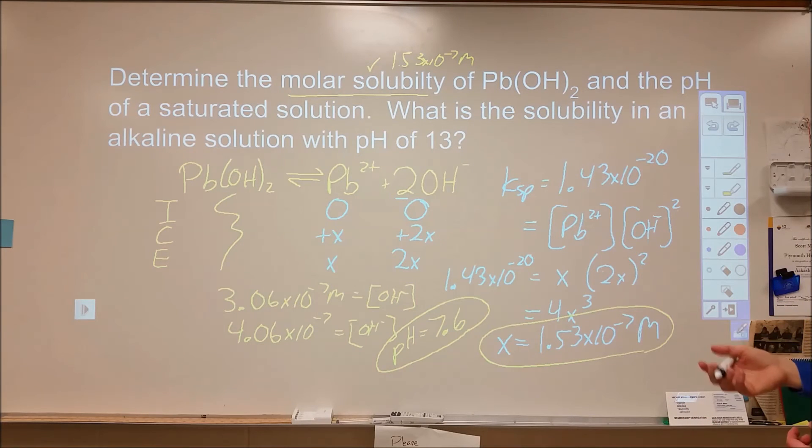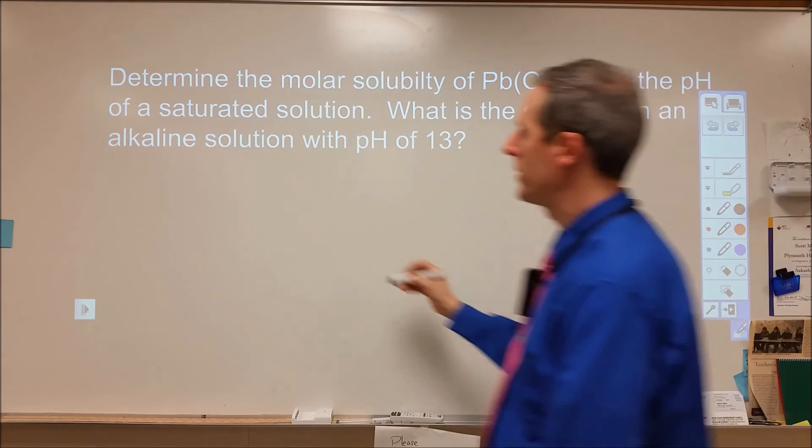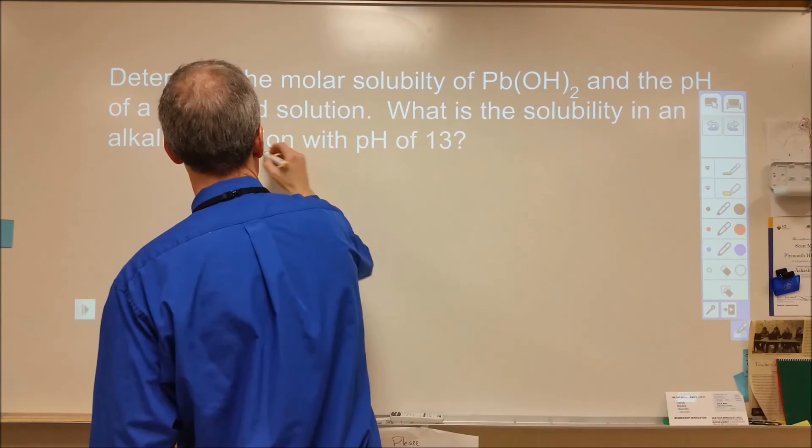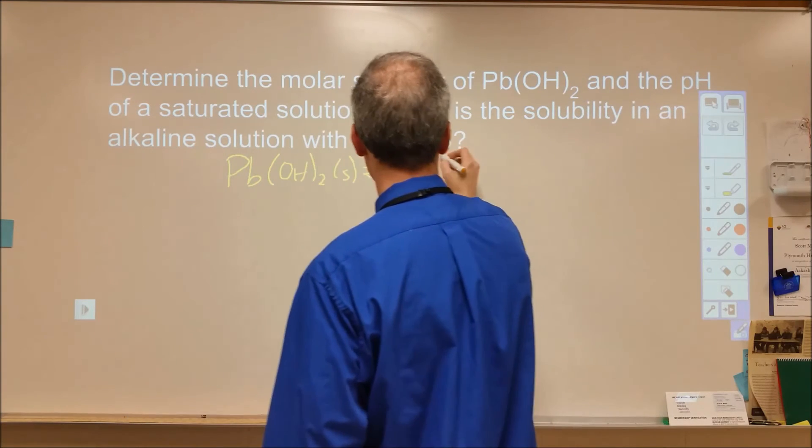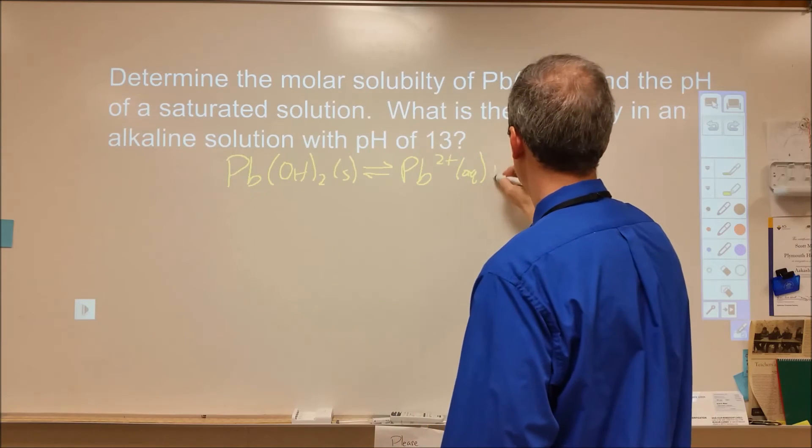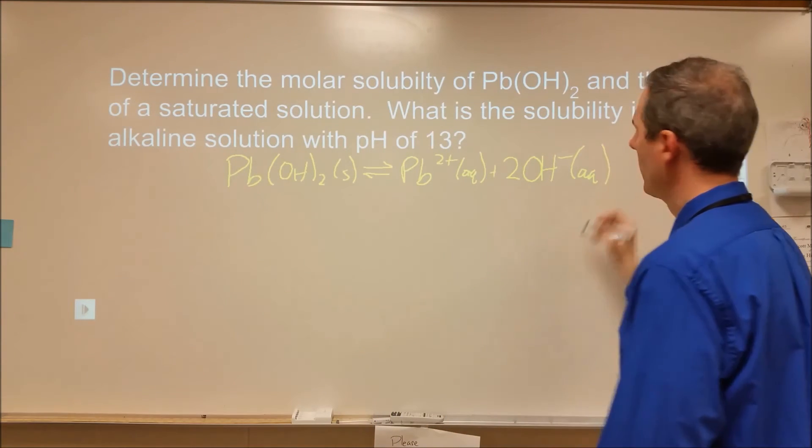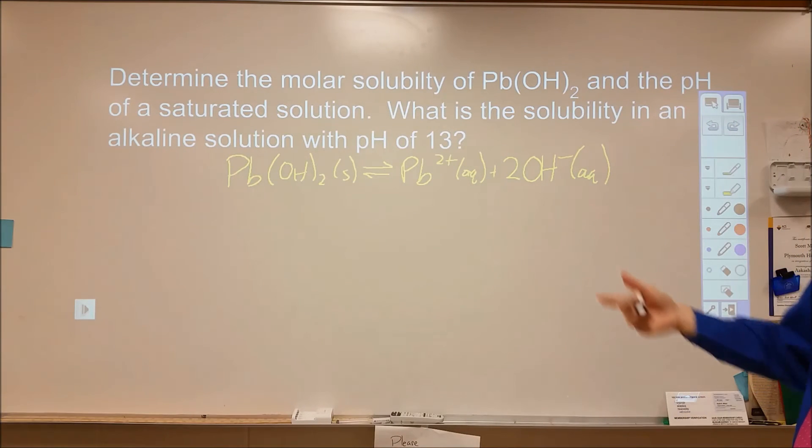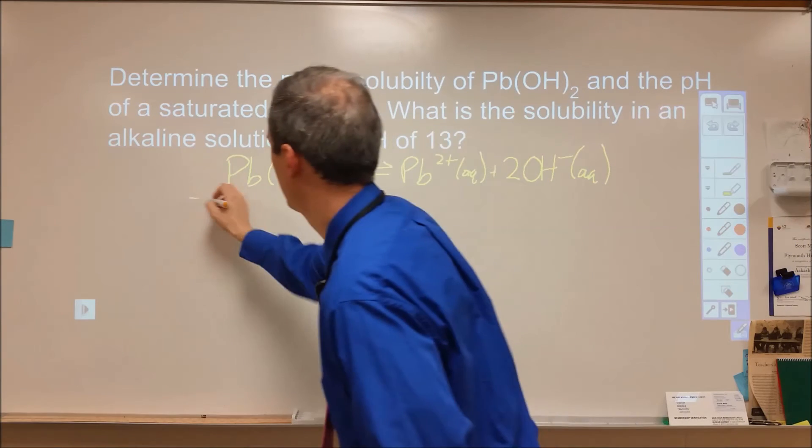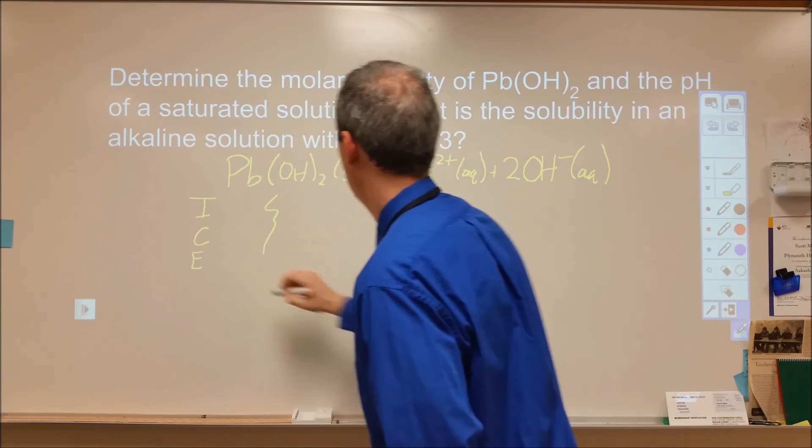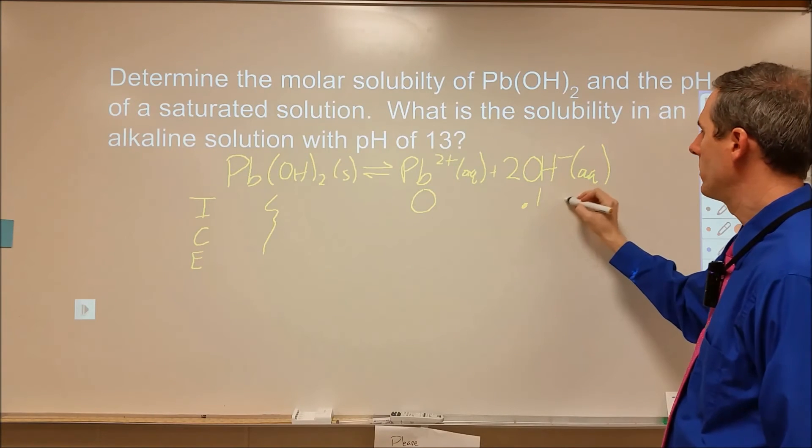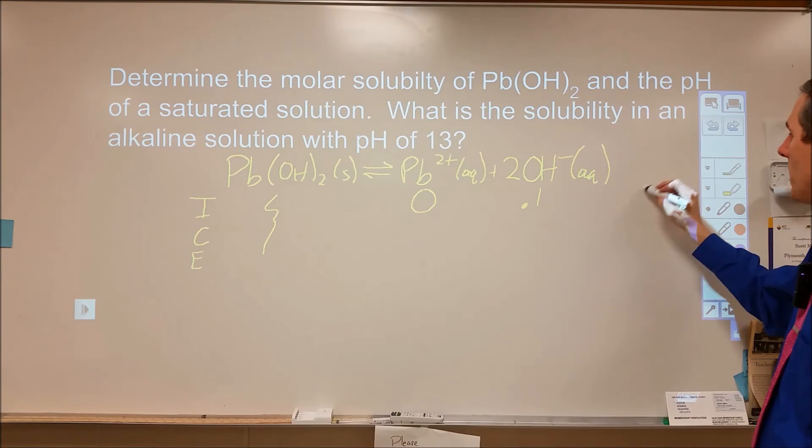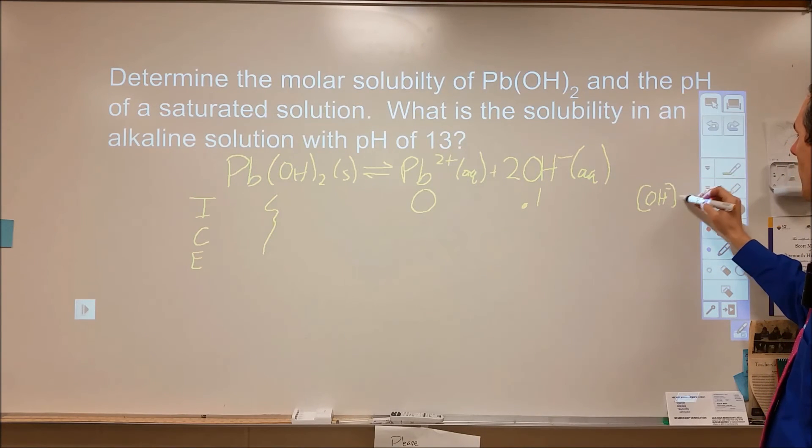Now I've got two answers done, but now I want to know what's the solubility in an alkaline solution with pH of 13. Let's go ahead and reset. Let's get our equation back up here. Now we're starting with a pH of 13. What that means is we're starting with an initial quantity of this. We're ignoring the solid. So we're starting with no lead, but we're now starting with 0.1 molar hydroxide. pH of 13 gives me a pOH of 1, which means my hydroxide will be equal to 10 to the negative 1 or 0.1.